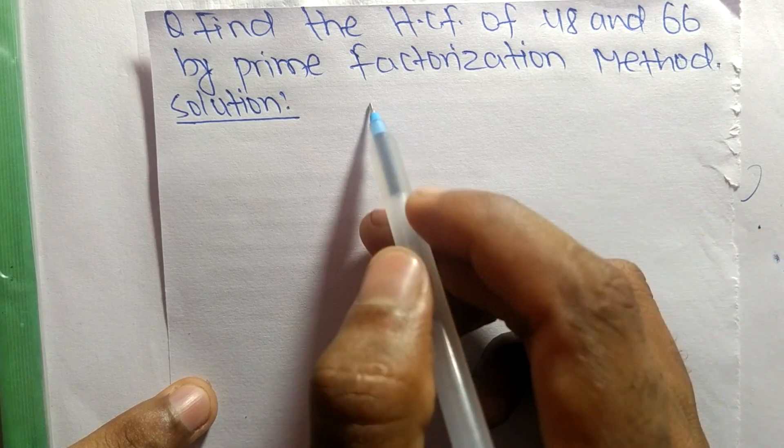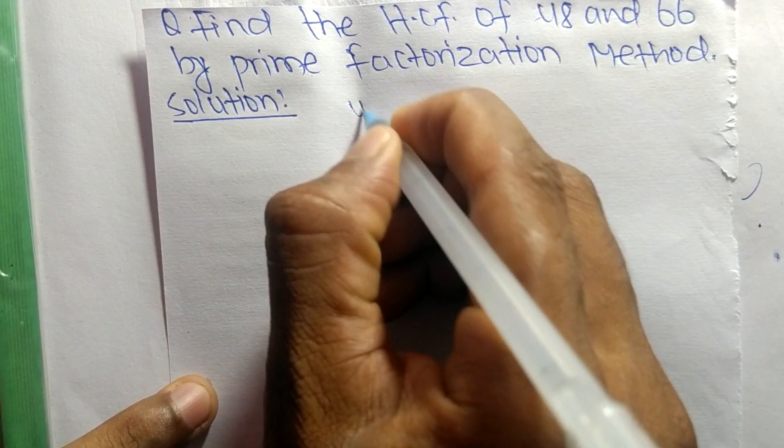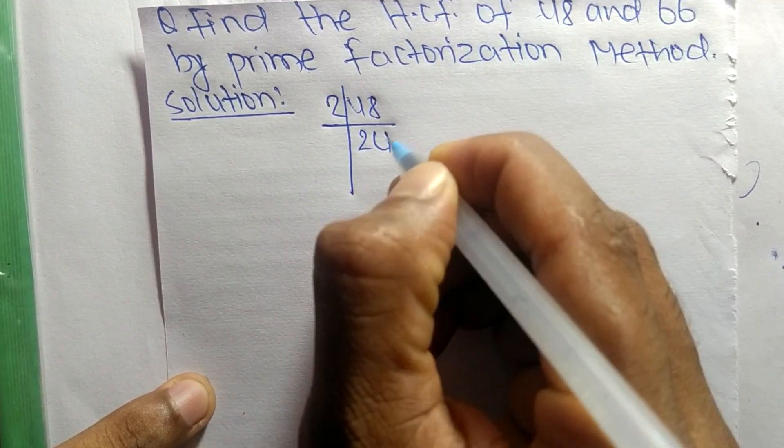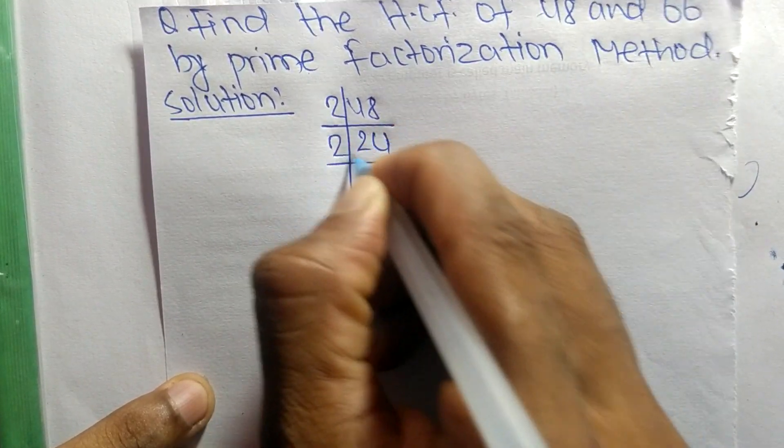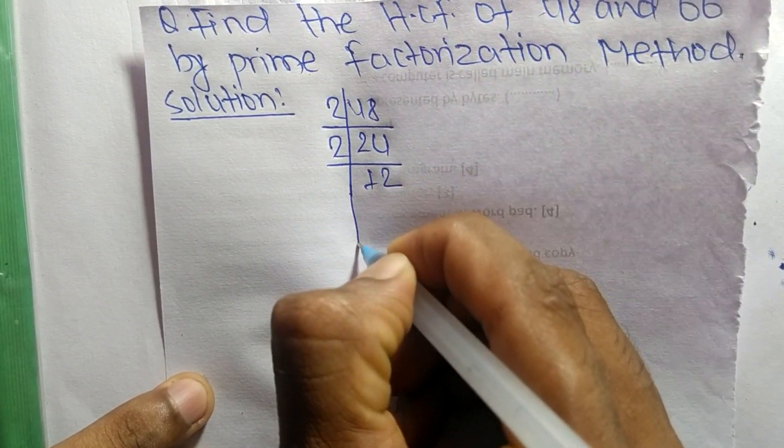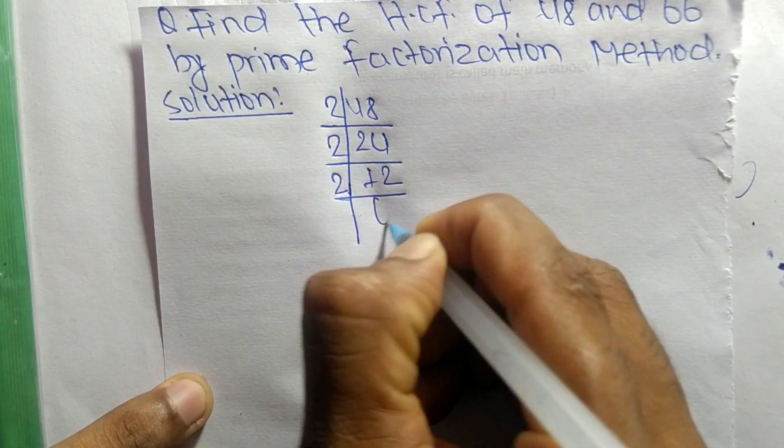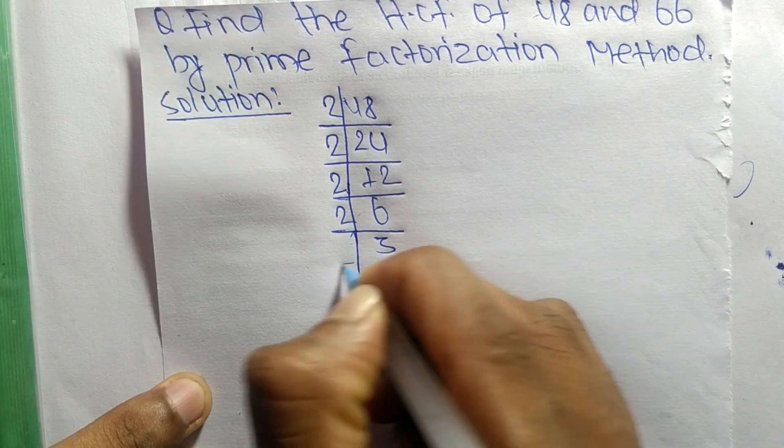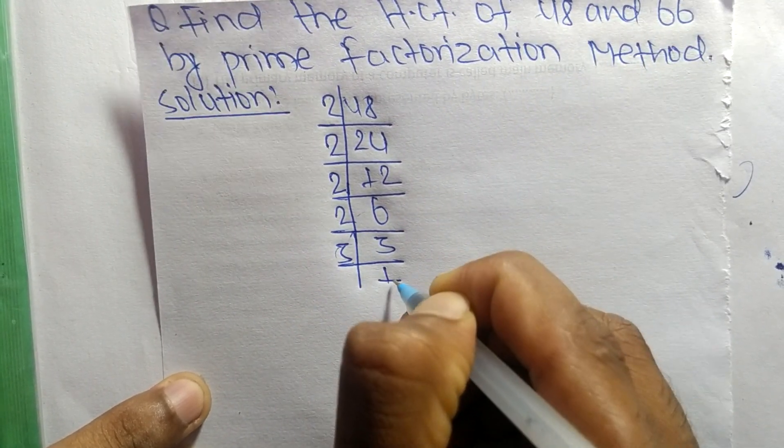First we find out the prime factors of 48. So it is 2 times 24 means 48, 2 times 12 means 24, 2 times 6 means 12, 2 times 3 means 6, and 3 times 1 means 3.